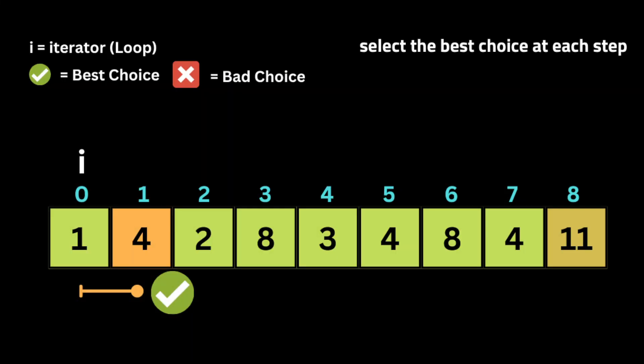Now that we have all the paths and arrows representing the numbers of jumps, let's see how we can implement the greedy algorithm to solve this problem. We will select the best choice at each step with the hope of finding the jump that will help us reach the last index in the input array.